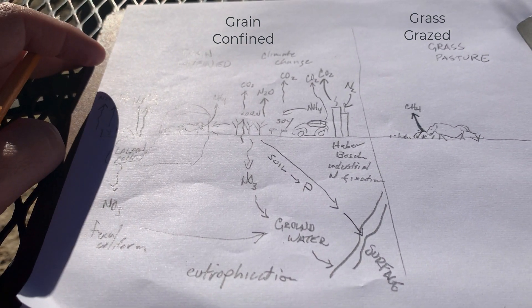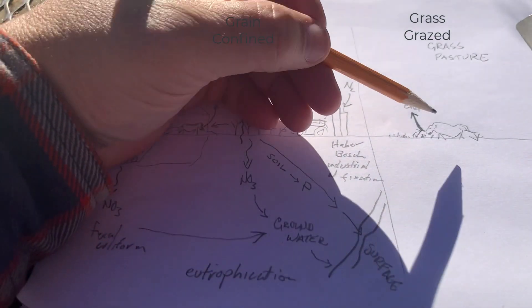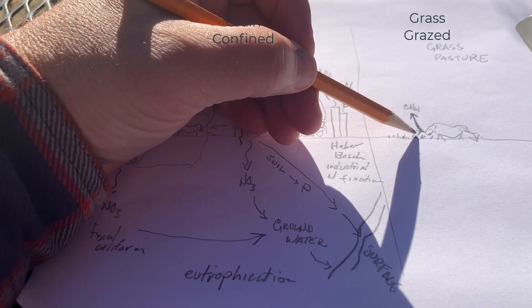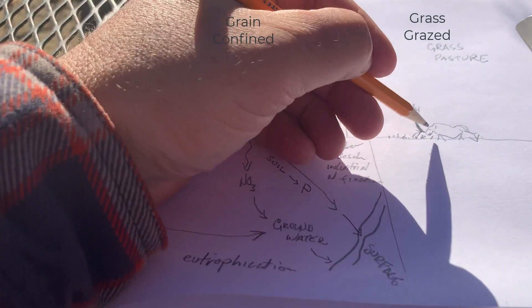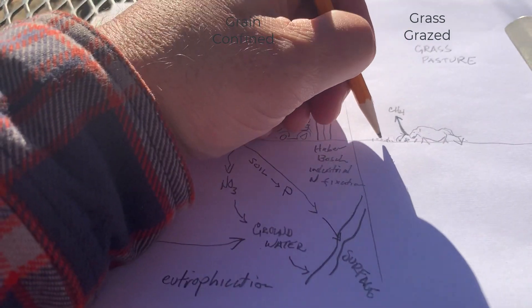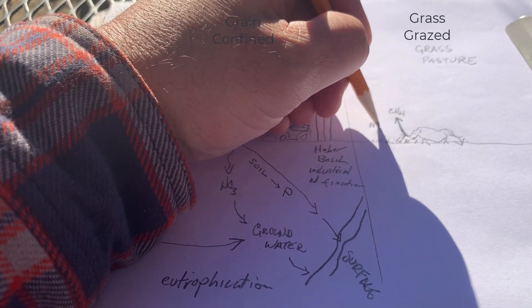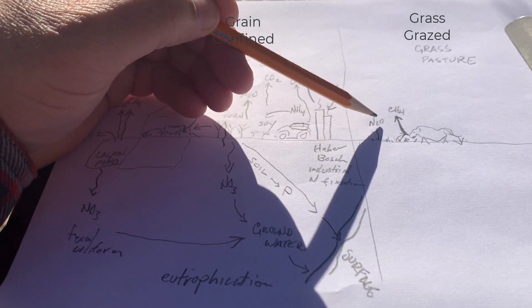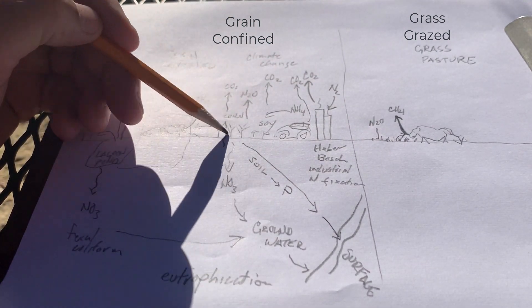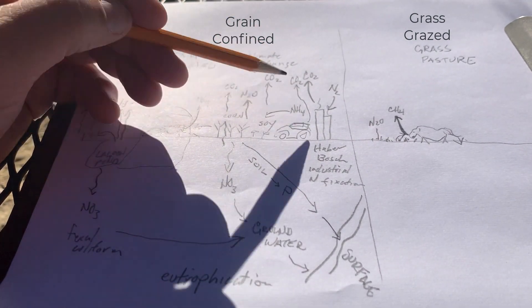Let's just for comparison look at this grass pasture where the livestock are out feeding themselves essentially on grass that was growing year after year as perennial grassland. As we've talked about, there are significant methane emissions. And there are some N2O emissions from these pastures, but they are significantly lower than they are from fields where a lot of nitrogen is being added for fertilizer.